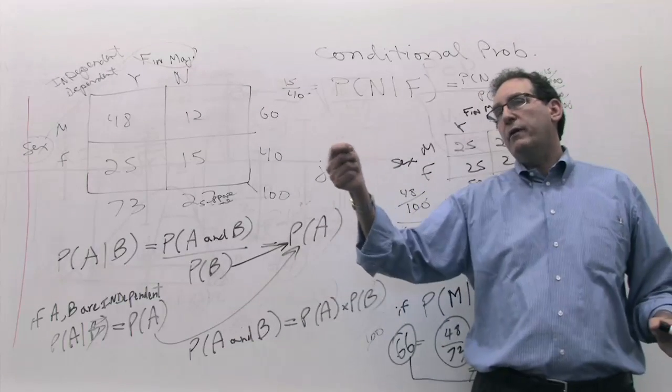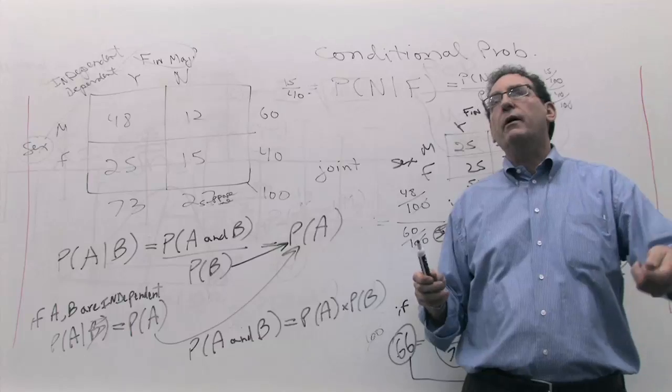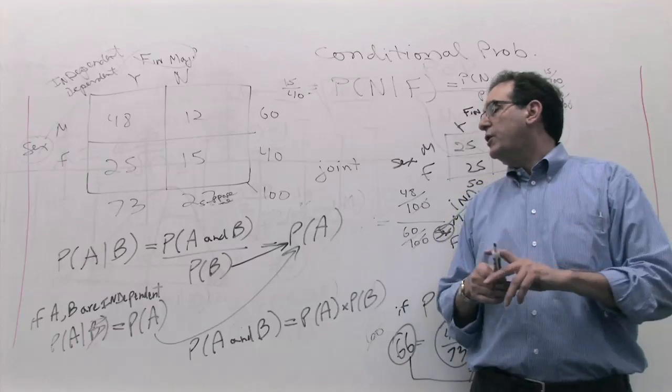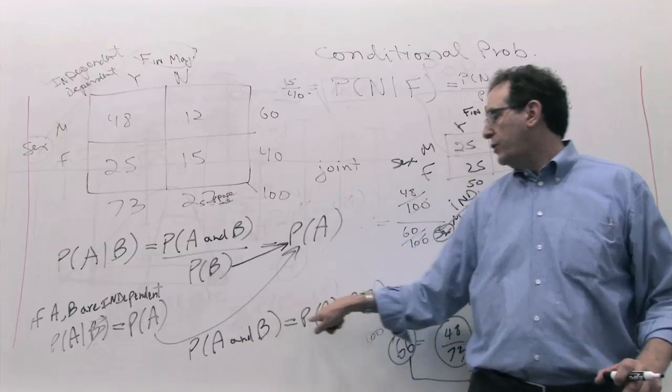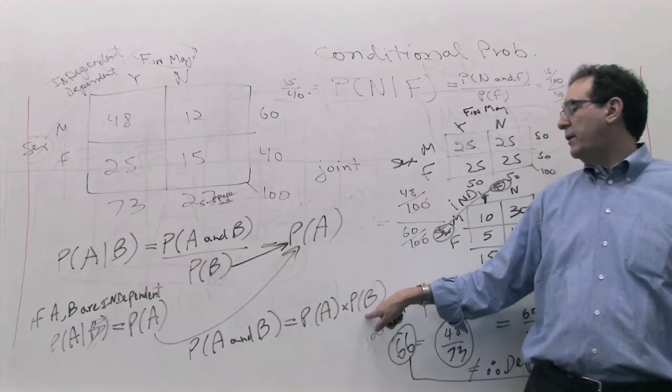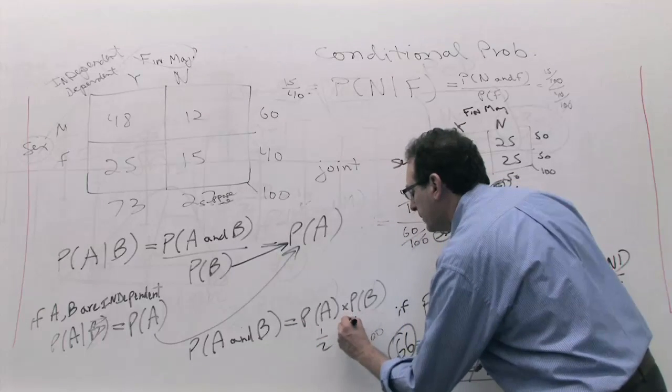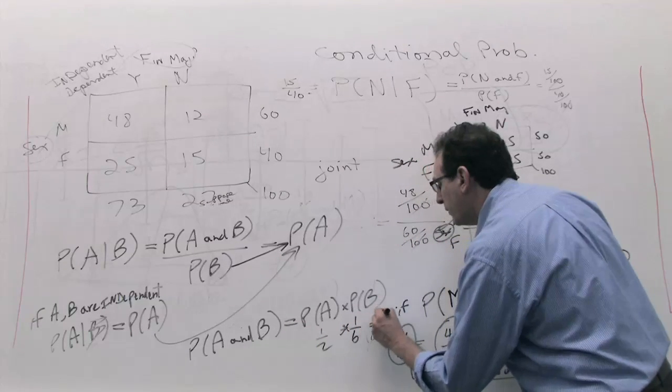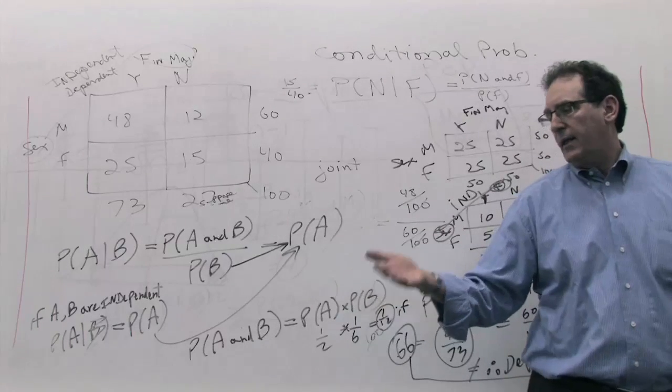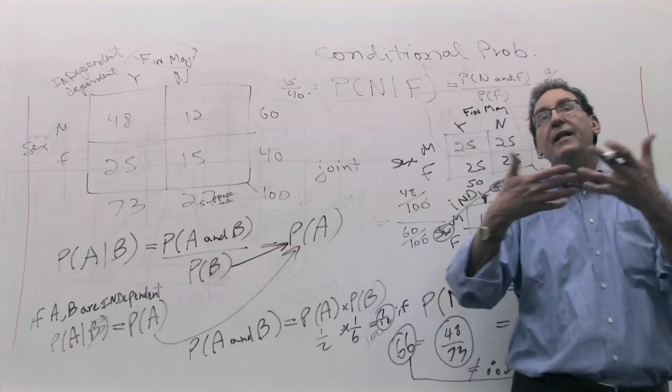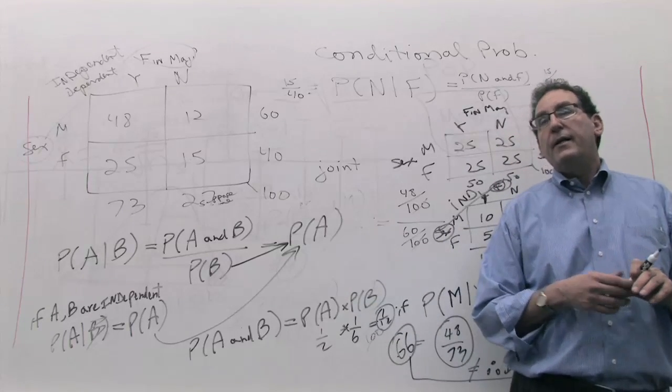But if they're truly independent, for example, if you're flipping a coin, the chance of a head is a half. And you're rolling a die, the chance of a three is one out of six. What's the chance of doing both at the same time? Well, it'll be a half times one out of six, which is one out of twelve. Is the coin and the die independent? Yeah, they don't know about each other. They can't affect each other. So you multiply them.